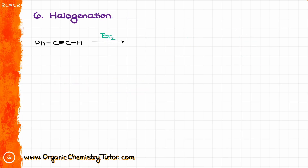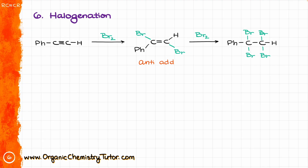The next reaction is halogenation — equally classic for alkenes and alkynes. In step one, anti-addition of halogens across the triple bond gives the corresponding vinyl dihalide (alkene). We can then proceed with a second addition of halogen to get a tetrahalide. For exam purposes, instructors often ask you to show the product of adding a single halogen molecule across the triple bond — the key thing being tested is that this is an anti-addition, so the bromines must be shown trans to each other.